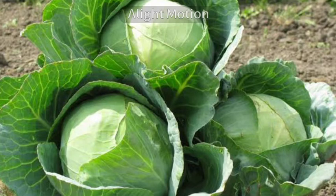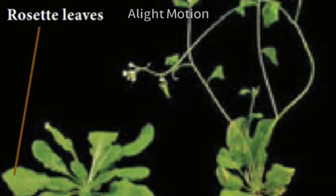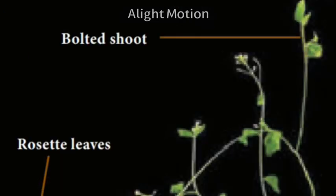We need to apply gibberellin to rosette plants to elongate the leaves with inter-nodes and achieve the desirable effects. This process is called bolting. In the picture, on the left side, the rosette leaves are shown. After applying gibberellin, the shoot is elongated, as you can clearly see in the picture.